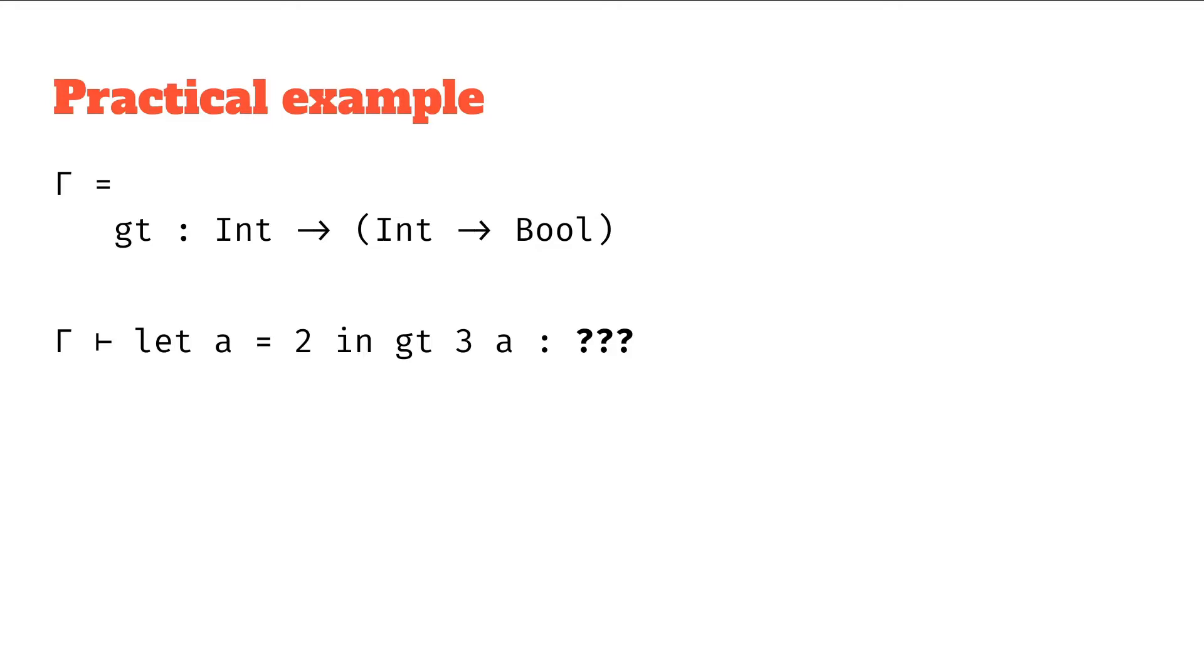Well, this is a let statement so we can write out our let statement rule. Substituting it in: the a kind of looks like the parameter x, the expression E0 looks just like the number 2, the E1 looks like gt 3 a - just trying to match that let binding statement to the let statement in the rule.